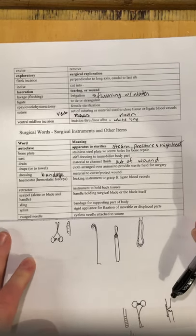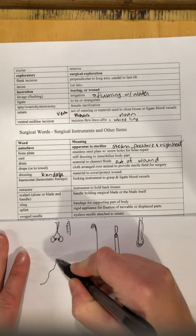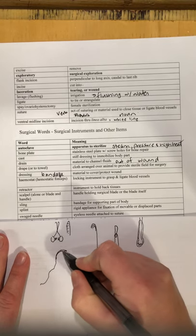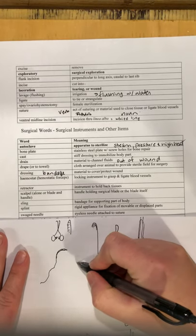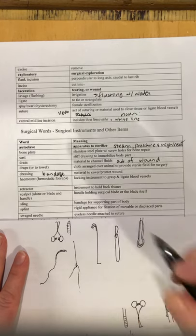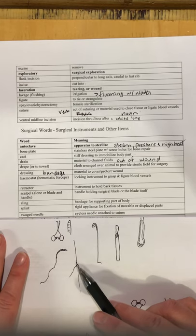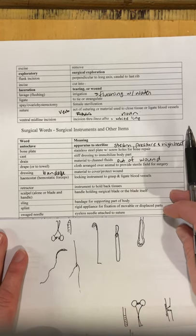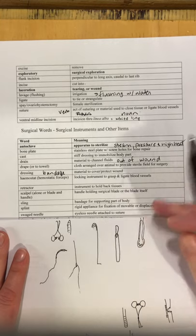A swaged needle is one that is already attached to suture material. The other option is an eyed needle, where suture material is threaded through — which is more familiar if you've done hand sewing. A swaged needle is how lots of suture material comes pre-packaged, so the doctor doesn't have to waste time threading a needle and can start suturing right away.